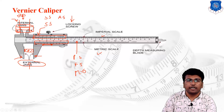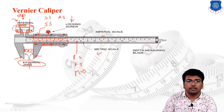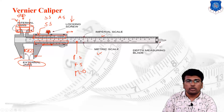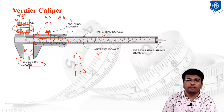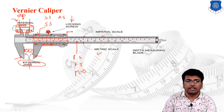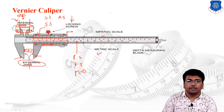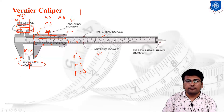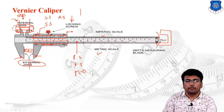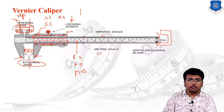A locking screw is provided on the auxiliary scale. Once you lock this screw, the auxiliary scale attaches with the main scale and will not move until you loosen the screw — this allows you to read the measurement properly. A depth measuring blade is also provided on the vernier caliper for measuring the depth of a given cylindrical block or similar features.